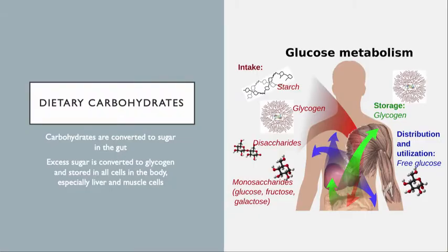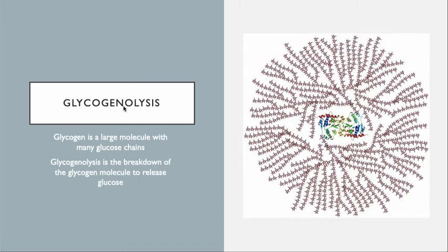Dietary carbohydrates are the source of blood sugar. When we eat carbohydrates, the body converts them to sugar, and excess sugar gets converted to glycogen — a storage form held predominantly in muscle and liver. But there's more to it. One way blood sugar rises overnight is glycogenolysis — the breakdown of glycogen, which is essentially a big ball of glucose — producing a usable form of glucose that gets sugar into the cells.